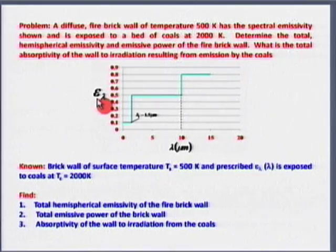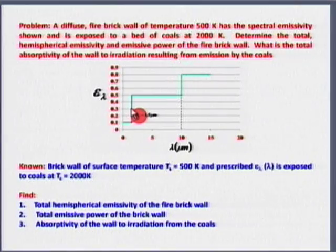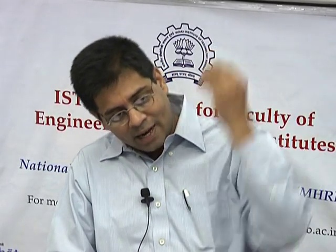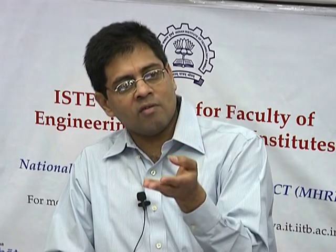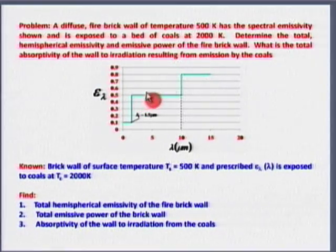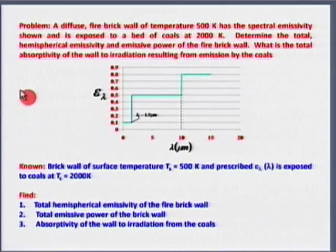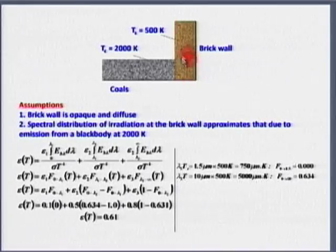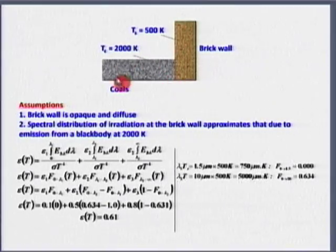I have epsilon-lambda versus lambda given. The moment I have that, I know it is not total emissivity — it is spectral emissivity. I am asked to find total emissivity, integrated over all wavelengths. The fundamental definition: epsilon(T) equals the integral from 0 to infinity of epsilon-lambda(T) times E-b-lambda(lambda, T) d-lambda, divided by E_b(T). Known: brick wall at T_s = 500 K, spectral emissivity epsilon-lambda given, coal temperature 2000 K. Assumptions: brick wall is opaque and diffuse.